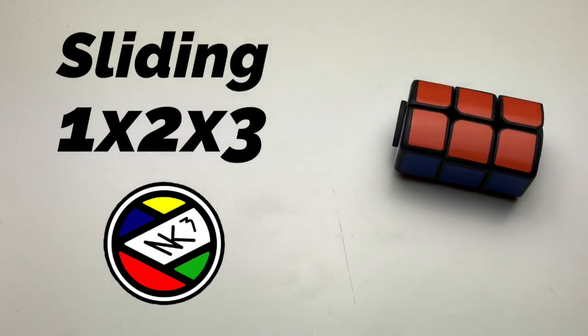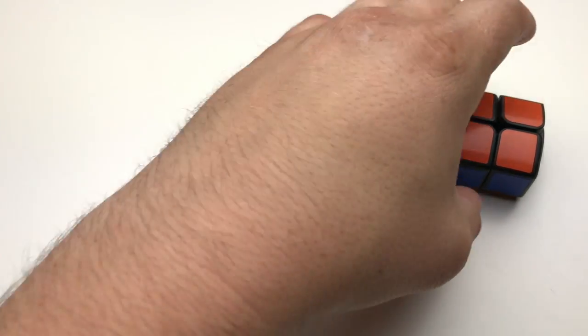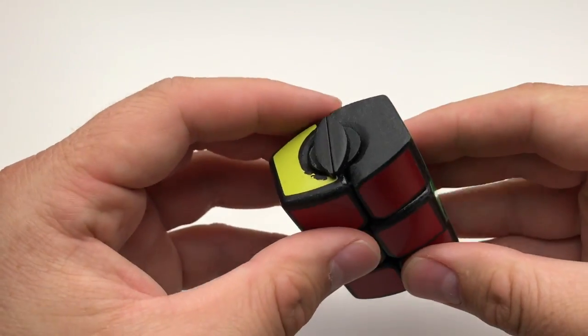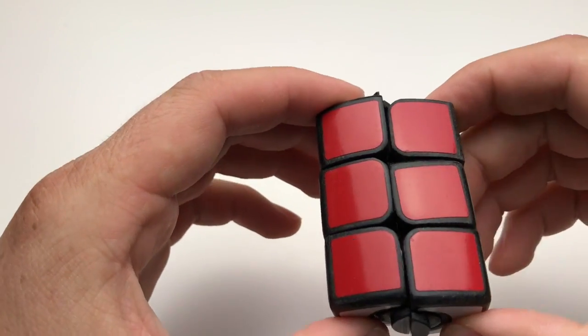Up next, we have the Sliding 1x2x3. This is another 3D printed puzzle that is actually pretty cool. I will make note, it's very hard to rotate the pieces, and that's to be expected.